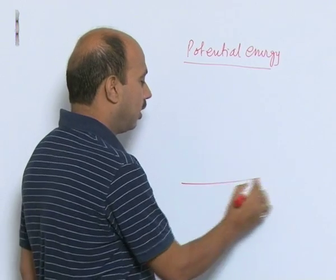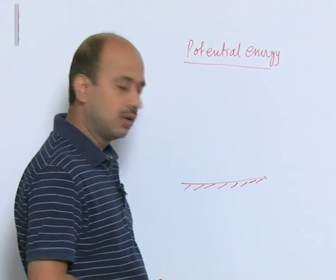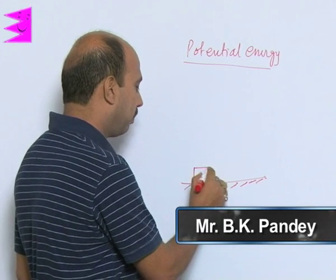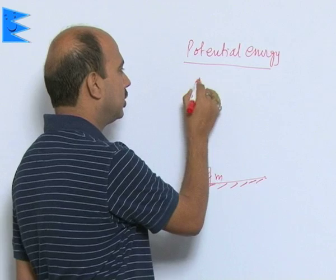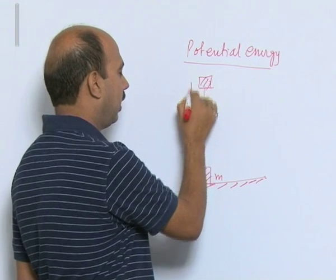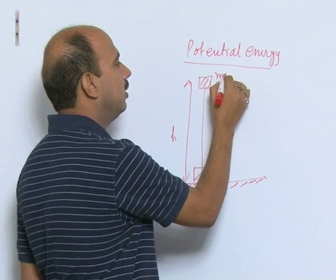Suppose you have this ground position I have taken. You have taken an object of mass m which is raised to height h, this height h is here from the ground. It has potential energy mgh.